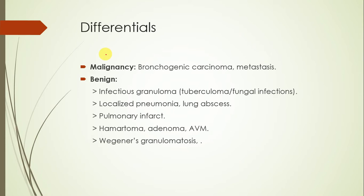We should first consider a set of differentials, and there are two broad categories. Although this might be a benign lesion, our first goal should be excluding malignancy. It could be a bronchogenic carcinoma, which is a primary lung cancer, or it could be a metastasis.